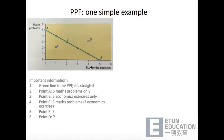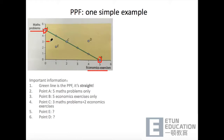图中X轴代表的是经济体的数量，Y轴代表的是数学体的数量。举个简单例子，一个人在一小时内可以做的数学体或者经济体数量是有限的。These are the two extreme cases, point A and point B. 在point A的时候，一人一小时只能做五道数学体；point B，一人一小时做五道经济体。那point C对应的是三道数学体加上两道经济体。